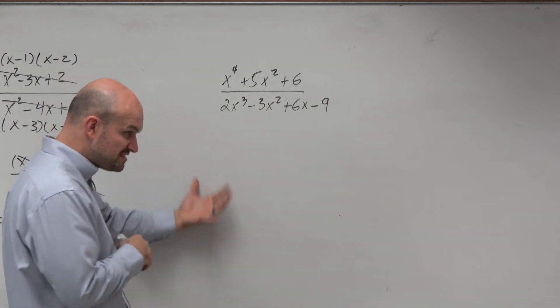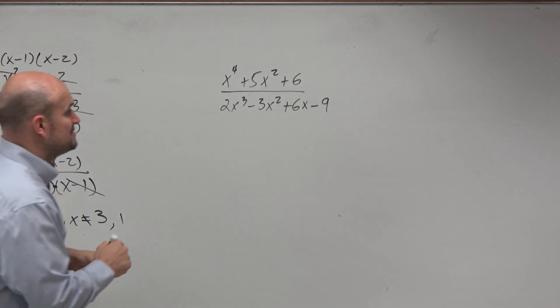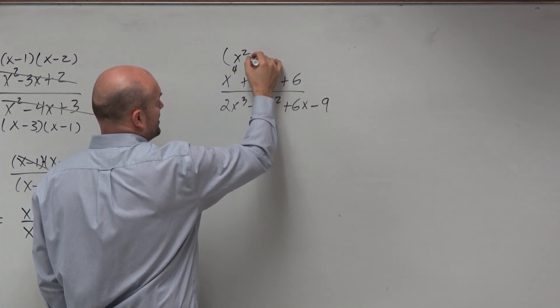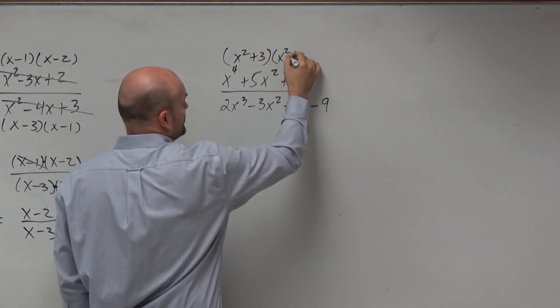Hopefully this isn't, since we've spent chapter 2, spent so much time doing this. We recognize that if I wanted to factor that as a quadratic, I would get x squared plus 3 times x squared plus 2.